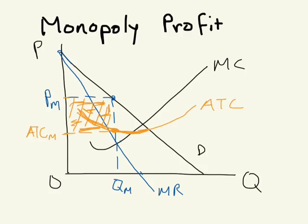This should look familiar — it's exactly the technique we used for competitive firms making short run profit. The difference is that output isn't where price equals marginal cost; rather, it's where marginal revenue equals marginal cost. The other important point about monopoly profit is there's no reason to expect it to be dissipated over time, because there are barriers to entry — that's why it's a monopoly. So there are some differences even though we're calculating profit using the same methodology.